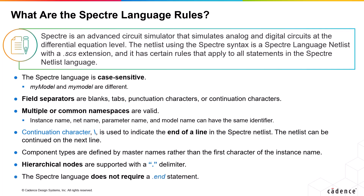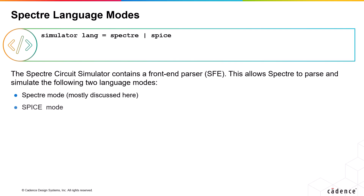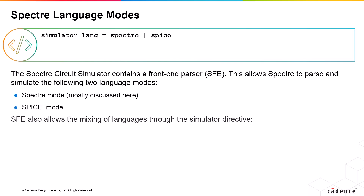The Spectre language does not require a .end statement like SPICE. The Spectre circuit simulator contains a front-end parser, SFV, that allows you to parse and simulate both a Spectre syntax NETLIST file and SPICE syntax NETs. SFV also allows mixing of languages through the SIMULATOR directive — SIMULATOR LANG equal to SPECTRE or SPICE — which sets the language context of a NETLIST. After a SIMULATOR LANG equal to SPECTRE line, you can have Spectre-related statements.